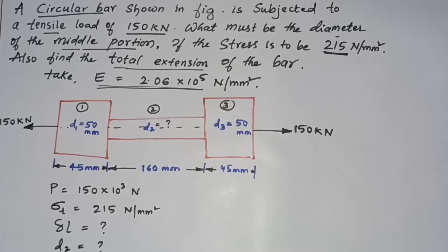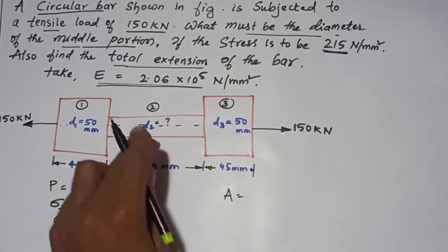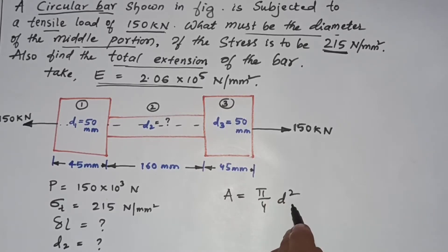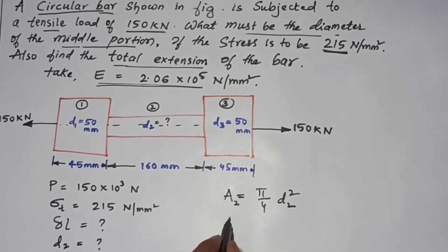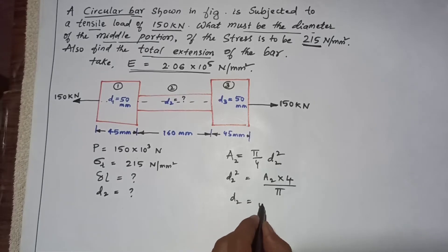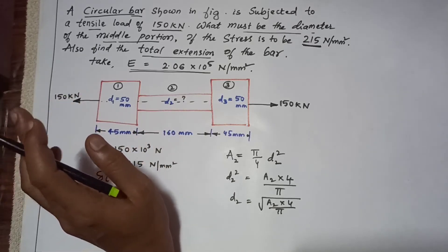First, let us calculate the diameter of the middle portion. For a circular bar, the area formula is A = (π/4) × D². So for element 2, A2 = (π/4) × D2², which rearranges to D2 = √(A2 × 4 / π). We need to find the area A2 first.